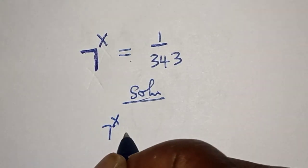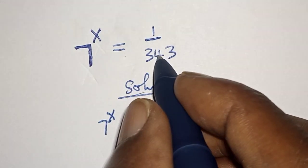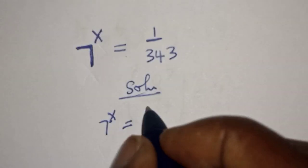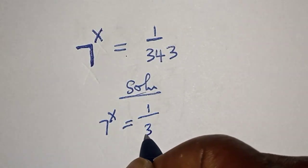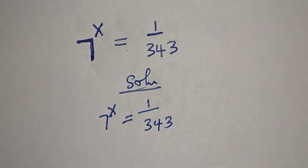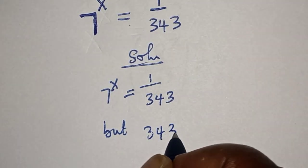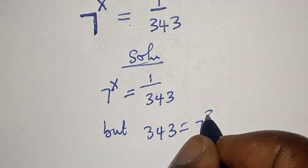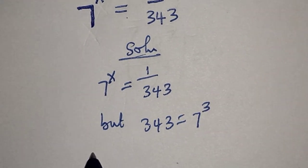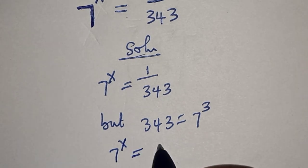But 343 is equal to 7 raised to power 3. Then we have 7 raised to power x is equal to 1 over 7 raised to power 3.